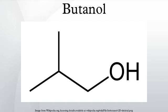Production: since the 1950s, most butanol in the United States is produced commercially from fossil fuels. The most common process starts with propane, which is run through a hydroformylation reaction to form butyraldehyde, which is then reduced with hydrogen to 1-butanol and/or 2-butanol.